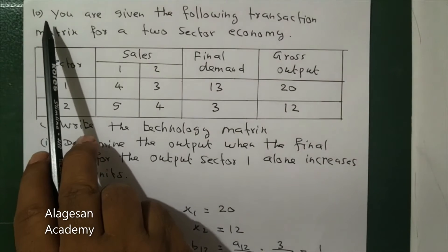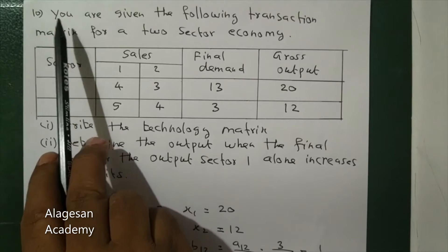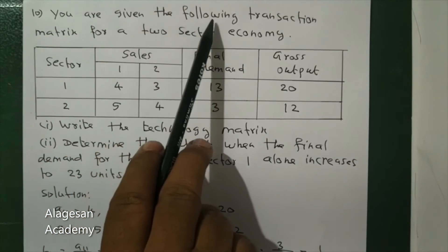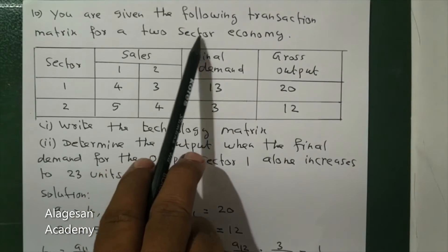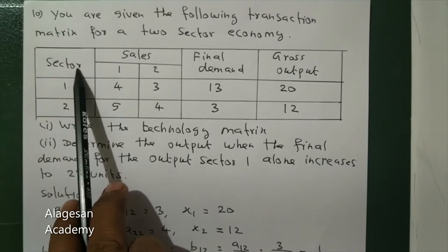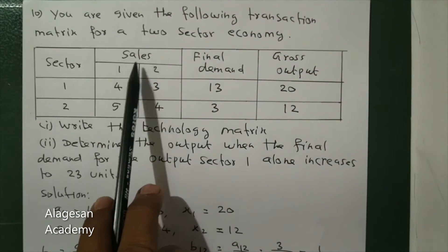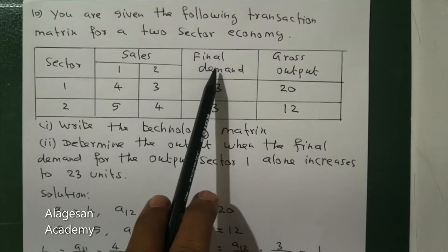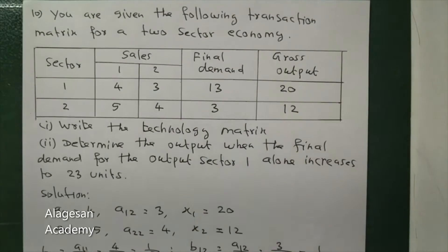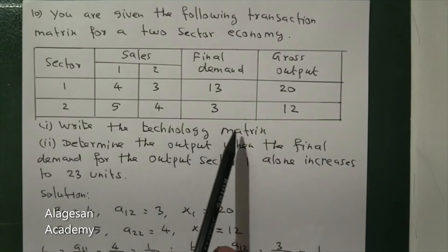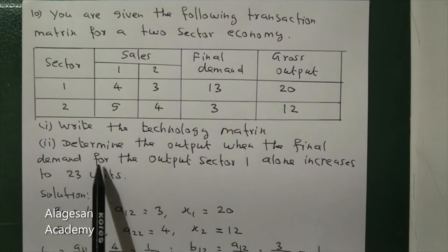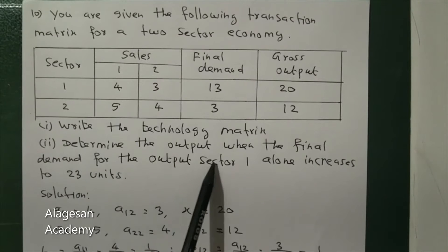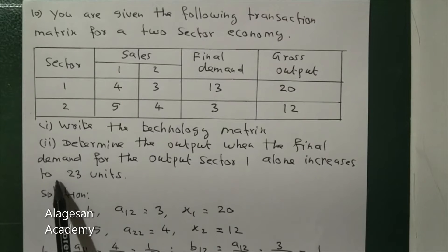Hi students. See question number 10. You are given the following transaction matrix for a two-sector economy — sector one and two — with sales, final demand, and gross output. Write the technology matrix, determine the output when the final demand for sector one alone increases to 23 units.